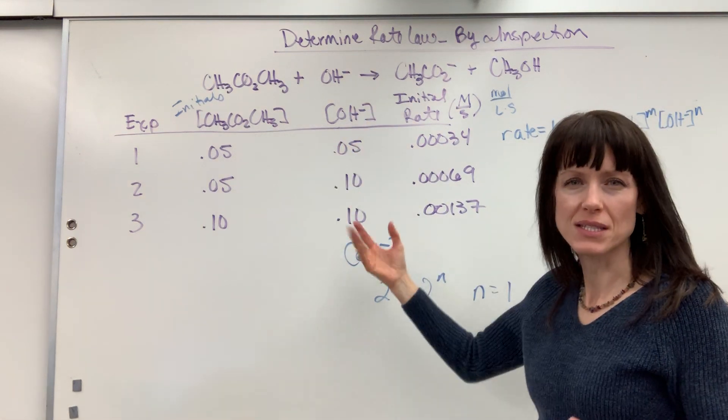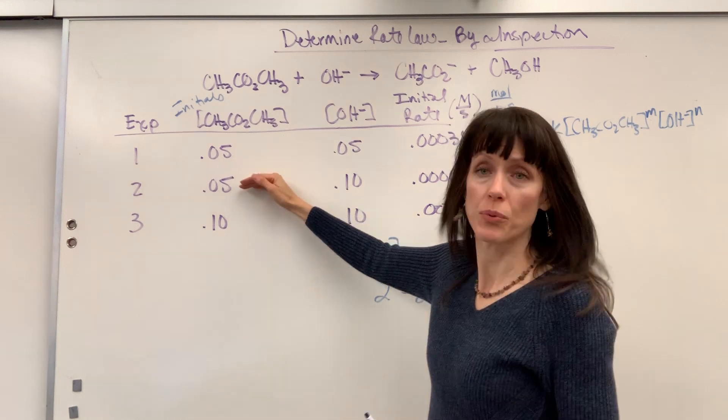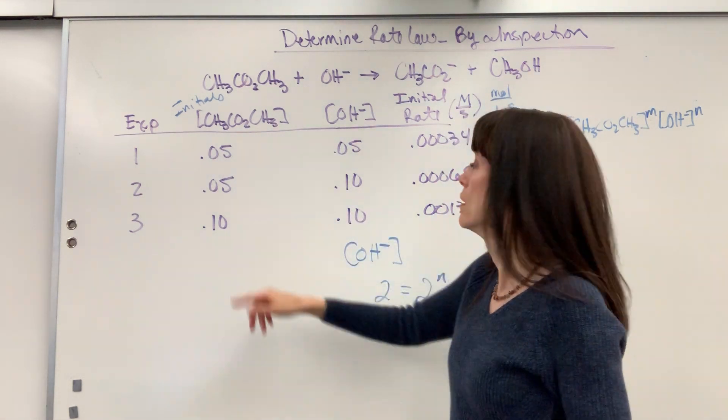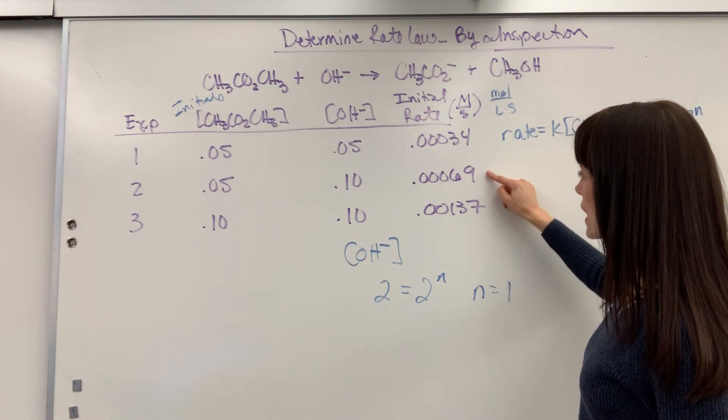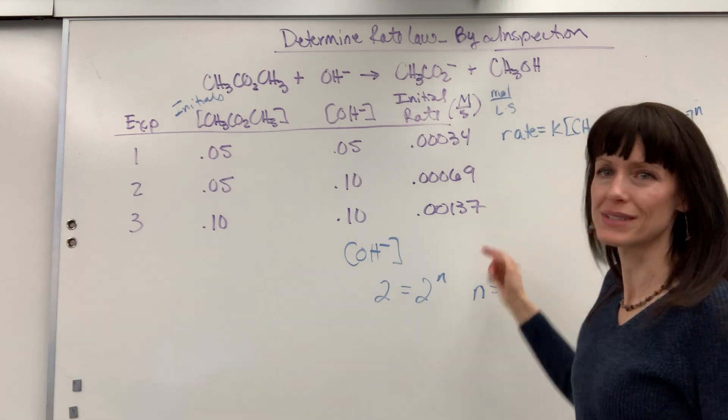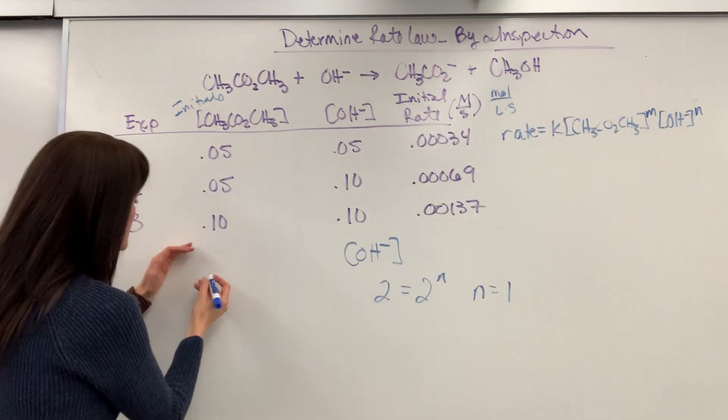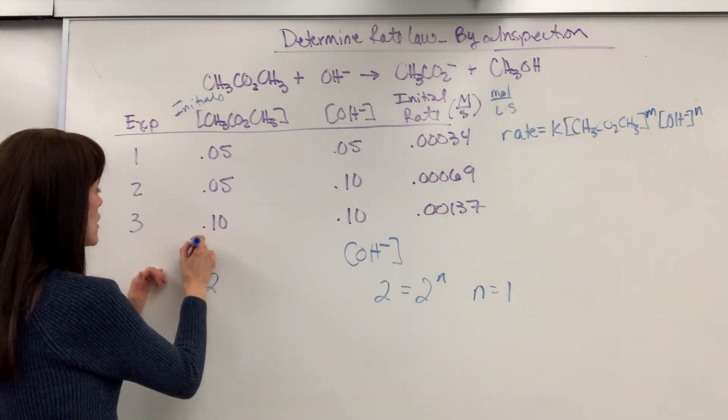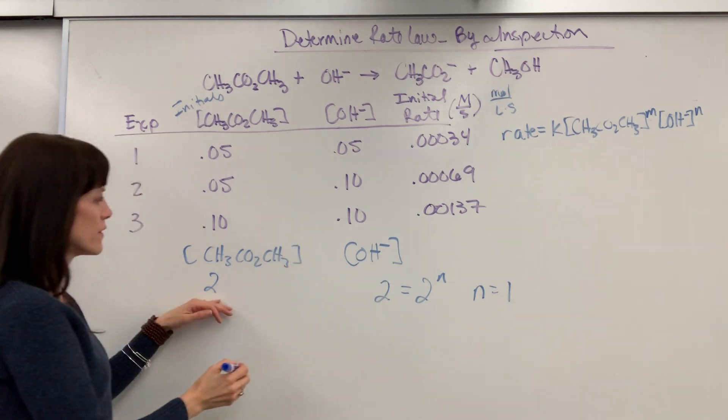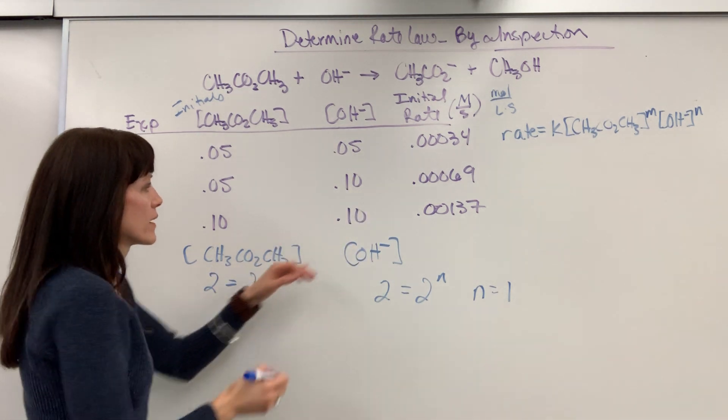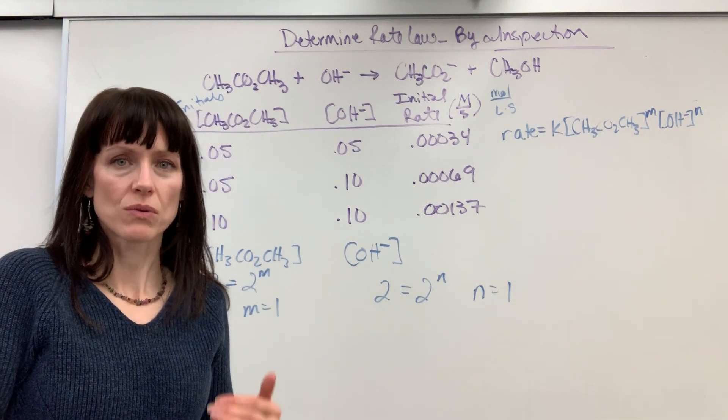So when hydroxide is held constant, let's see what the chemists did. They had a concentration for methyl acetate 0.05, they doubled it to 0.1. Let's see what happened to the rate. So this rate went from 0.00069 to 0.000137. That also doubled. So that means if my methyl acetate doubled and my concentration doubled, then M must also be a first order.